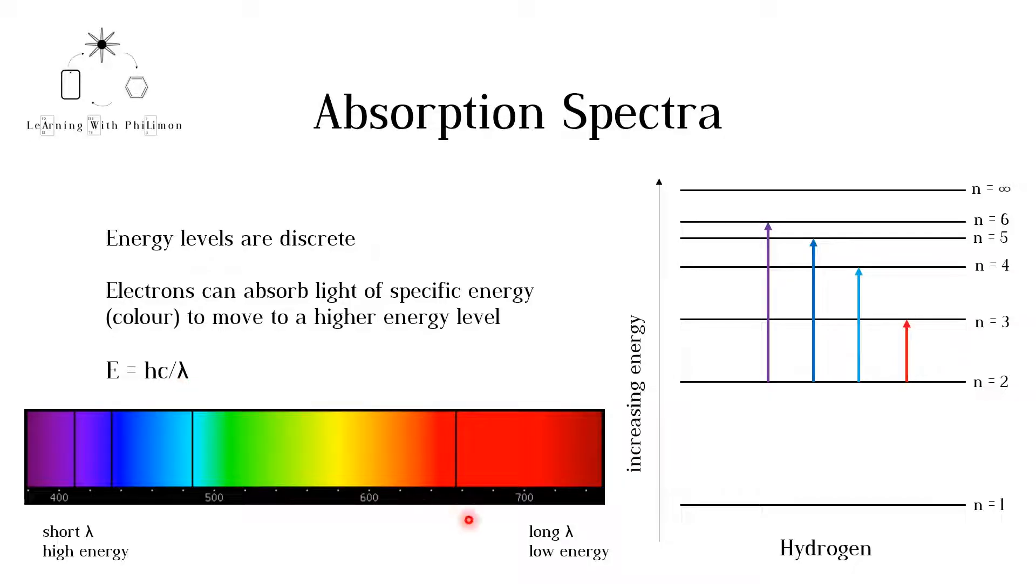Red light has a long wavelength and therefore a low energy. Violet light has a short wavelength and therefore a high energy. This particular absorption spectrum belongs to the element hydrogen.